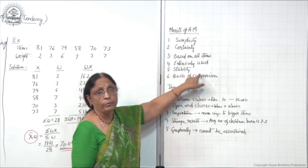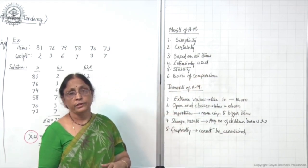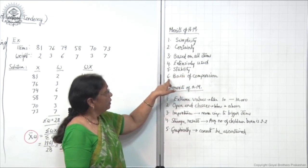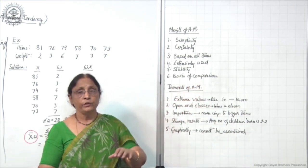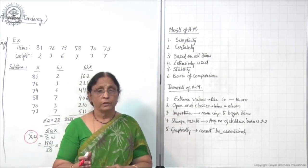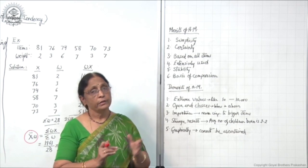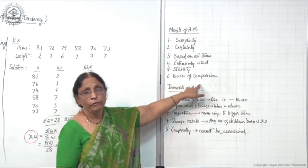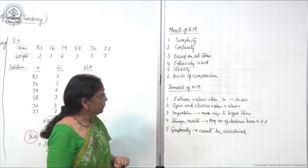The fifth merit is that it is the most stable method, meaning it gives accurate results. Then, it is the basis of comparison — you can easily compare different items or different data, because the results are very accurate and the process of calculating arithmetic mean helps in comparison of data. So these are basically the merits of arithmetic mean.